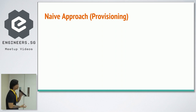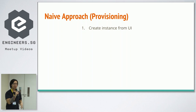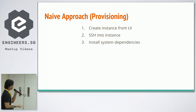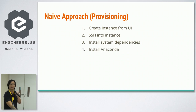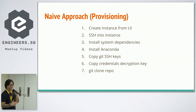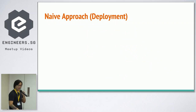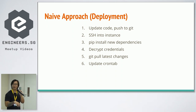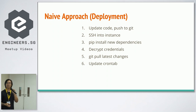When setting up a brand new server, you create an instance from the UI, SSH into the instance, install system dependencies — maybe it's a Linux instance and you're doing apt-get based on whatever you need — install Anaconda for your shared Python environment, and copy your Git SSH keys over because you need to clone the repo. That's how a naive approach looks for provisioning. For deployment, you're basically just updating your code, pulling it into the server, and updating crontab when done.